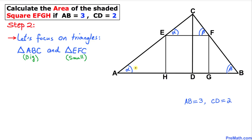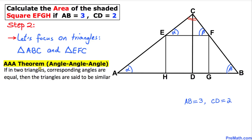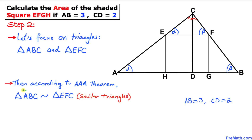Now let's focus on these two triangles: the bigger triangle ABC and the smaller triangle EFC. We can see that both of these triangles share angle C. By the angle-angle theorem, if in two triangles corresponding angles are equal then the triangles are similar. Therefore we conclude that triangle ABC and triangle EFC are similar triangles.